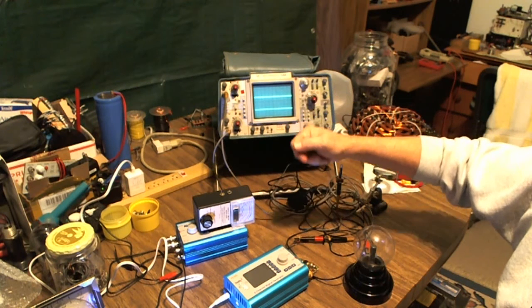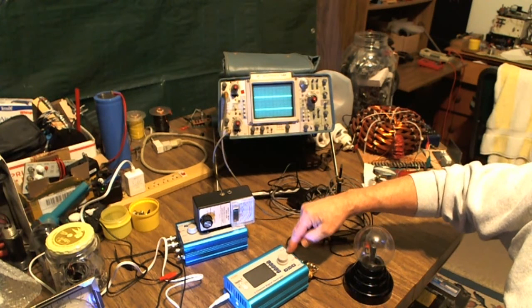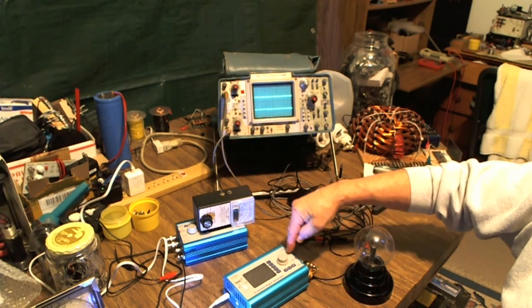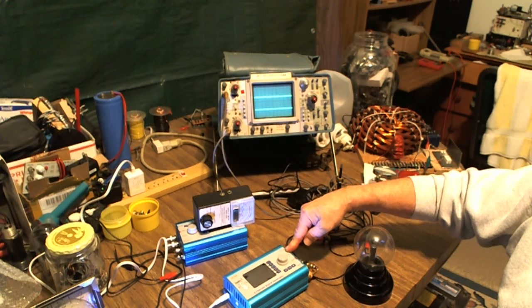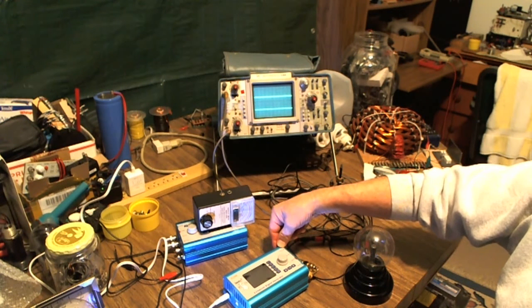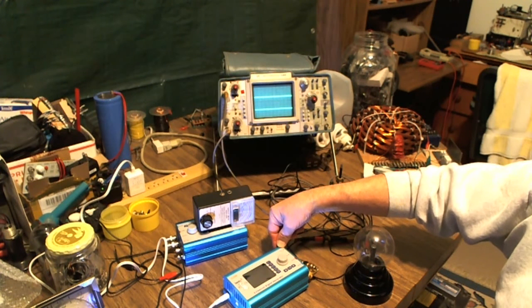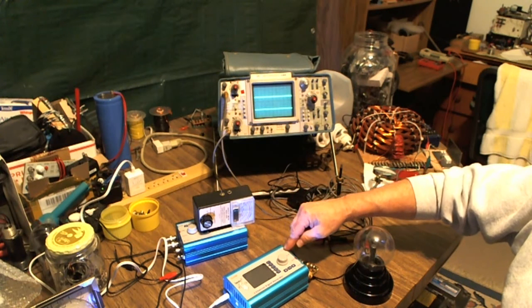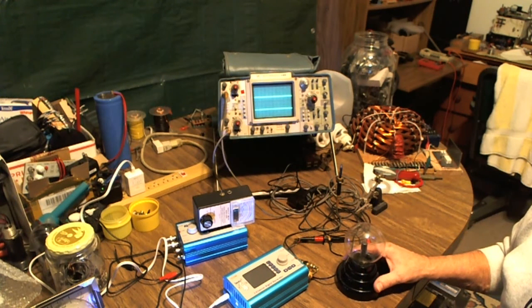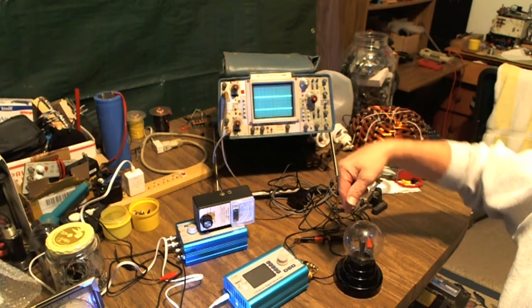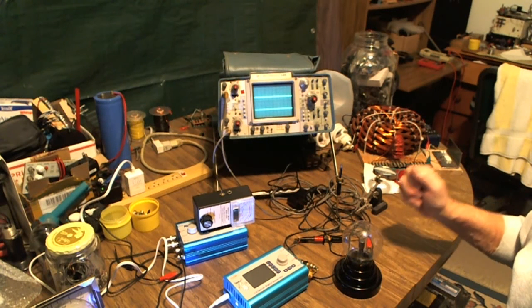Channel 1 is going to be an output from channel 1 of the function generator. The function generator has two channels and is capable of less than 1 hertz to about 5 megahertz frequency range. It generates square, triangular, sawtooth, and sine waves. I'm going to be using a 25% duty cycle square wave to drive the modified circuitry in this plasma ball.